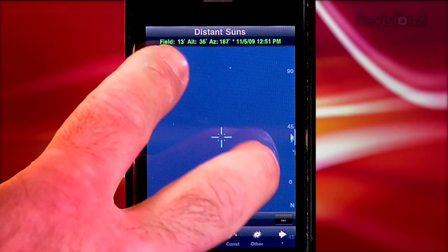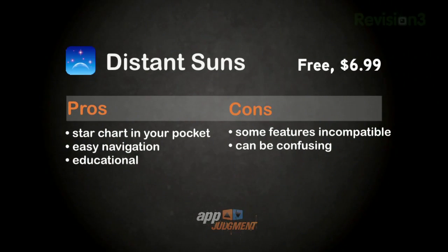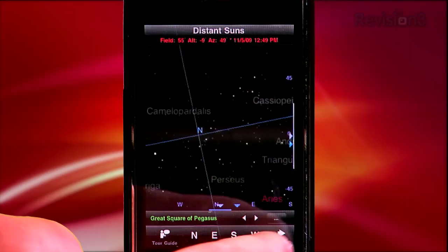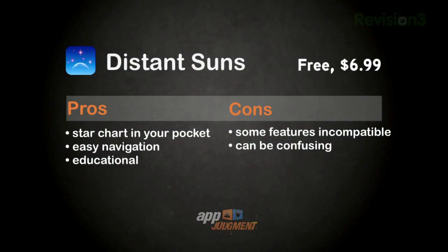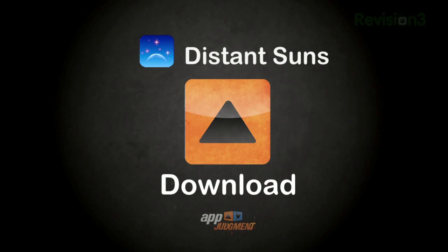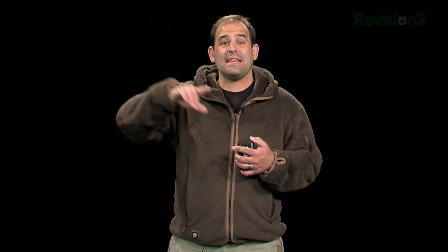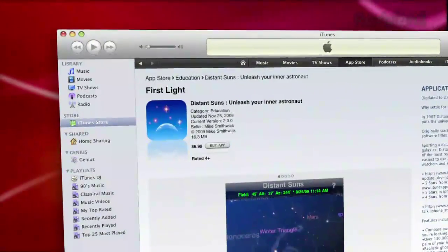I bet you can't guess if I'm going to call download or don't download on this one. Distant Suns Light gives you a complete star chart in your pocket, easy navigation for astronomy newbies, and it's great for finding and identifying objects in the night sky. The drawbacks? On older iPhones you'll have to drag the screen to the direction you're facing. And frankly, there are a whole lot of objects up there, so you can get a little lost without the nav tools. I say download this app — it's a fun tool for learning about the night sky. And if you want to know what's going to be in the sky later tonight, download the $6 paid version.